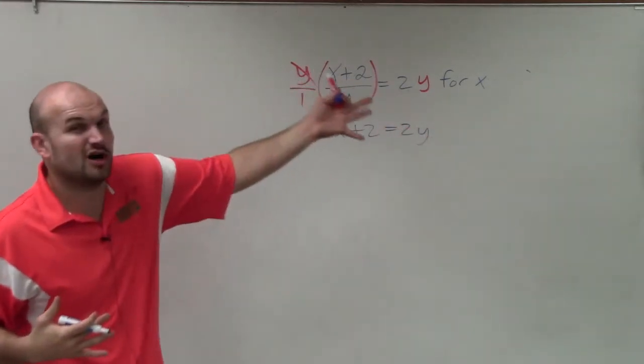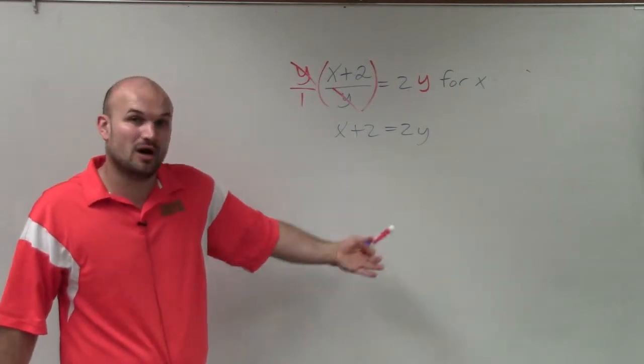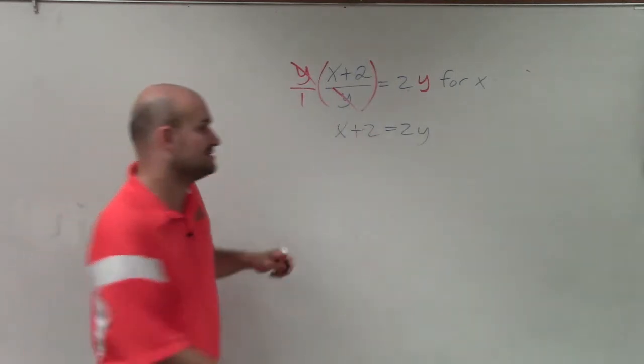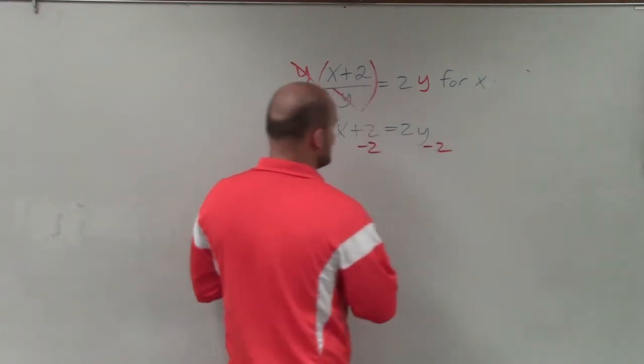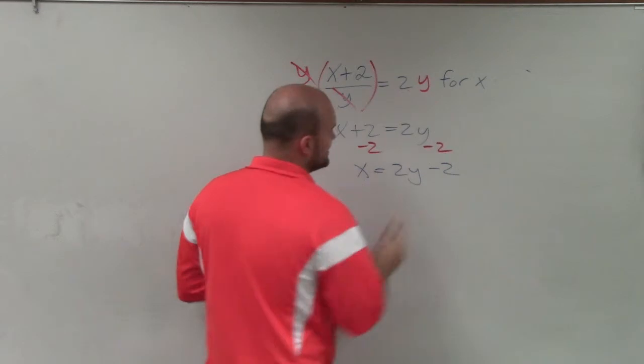So now it says to solve for x. That means I need to say, alright, what else has happened to my variable x that I need to undo? Well, my variable is being added by 2. So I'm going to subtract 2 on both sides. Therefore, my final answer is x equals 2y minus 2.